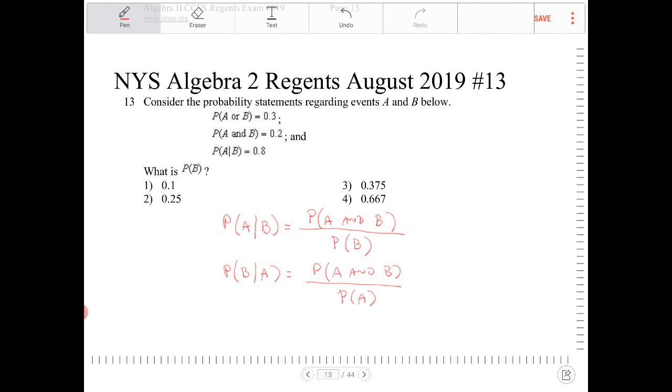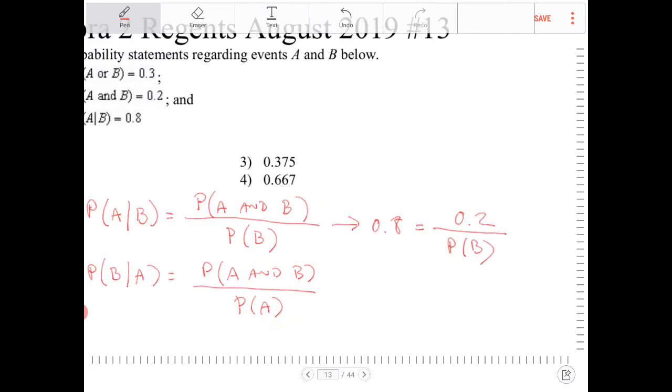In this case, we're asked to find out what is the probability of B. We have information about this. Probability of A given B is 0.8, the probability of A and B is 0.2, and we're asked to find out what is the probability of B here. That is the only thing that is unknown in this equation.